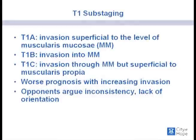There is literature on T1 substaging, where T1A is invasion of the superficial aspect of the muscularis mucosa — not to be confused with muscularis propria. The deeper the invasion, the more aggressive the disease. Some opponents argue there is inconsistency in substaging, but trials have shown that with collaboration between pathologists and urologists, up to 90% accuracy can be achieved.